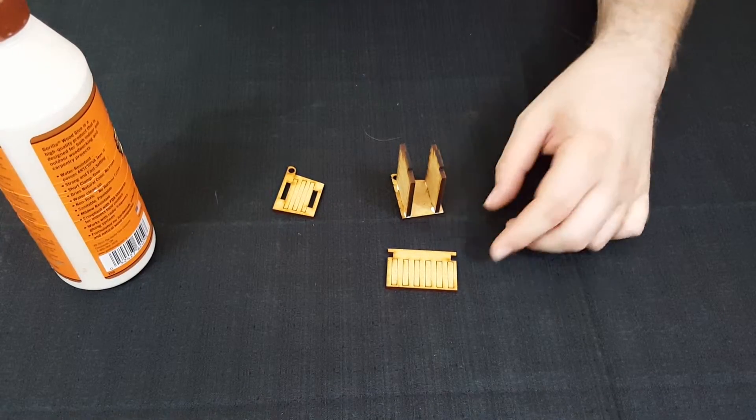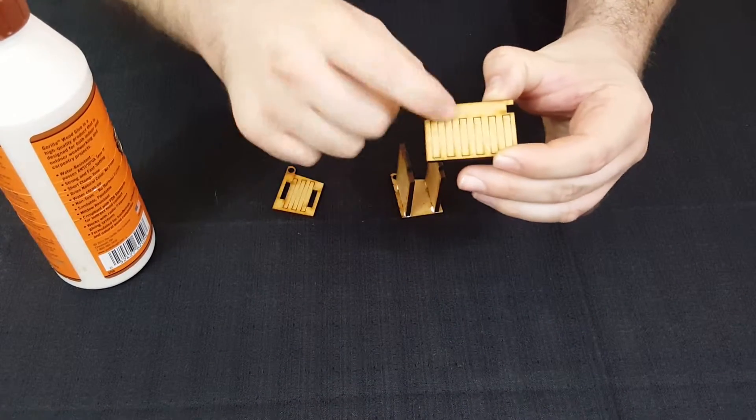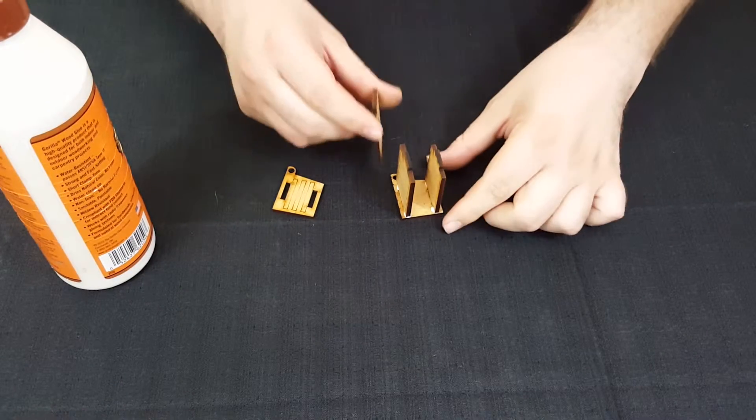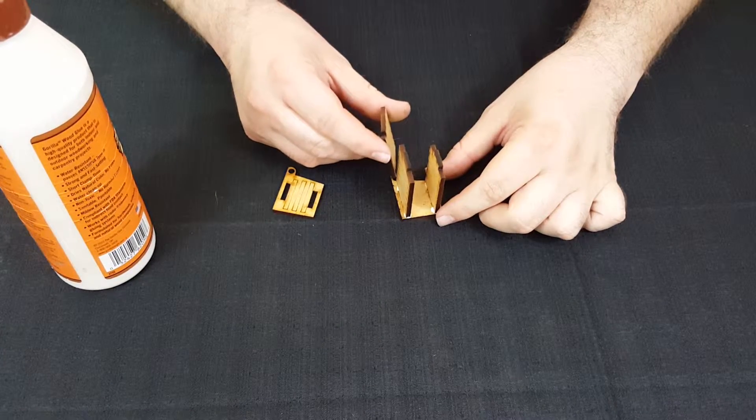Really simple so far. Now, the lid to the dumpster has these little tabs on it. You're going to want to make sure that the textured part is out, and you're just going to put it in here onto this hole—no glue involved at all.